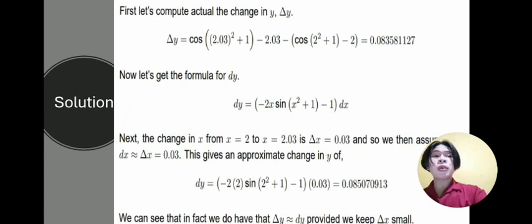which equals 0.083581127. Now let's get the formula for dy: dy = [-2x sin(x² + 1) - 1] dx.